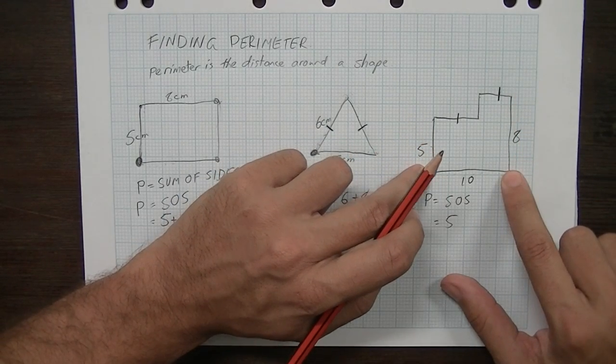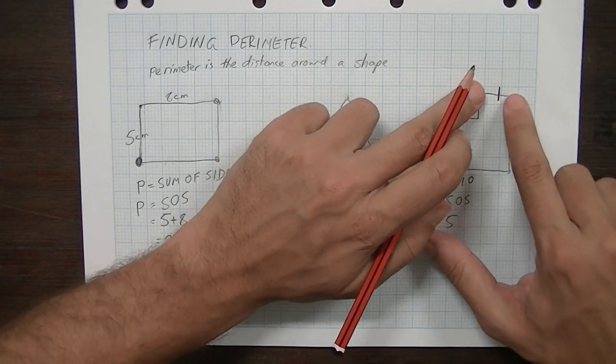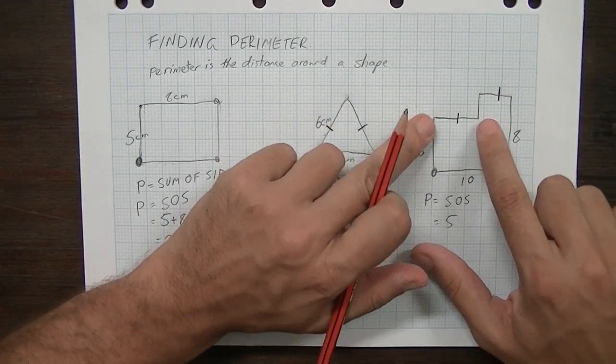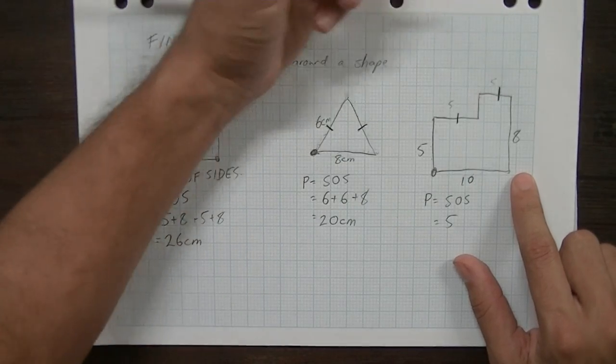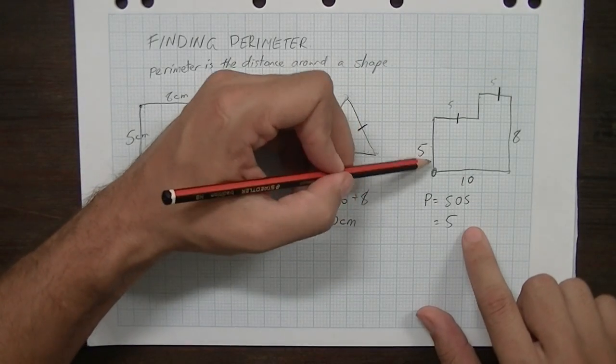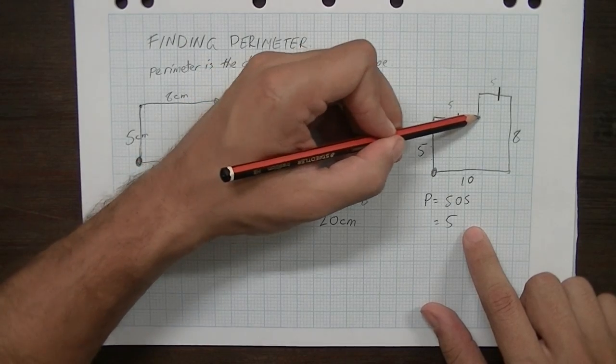So, if that's 10, and these are the same length, even though they don't look like it in my diagram, that means that that must be 5, and that also must be 5. So, looking at it, 5, 5.